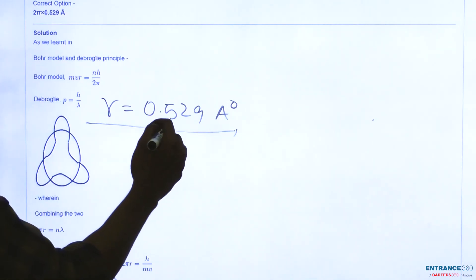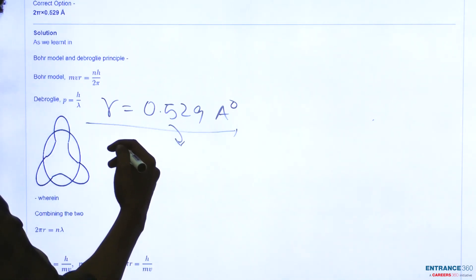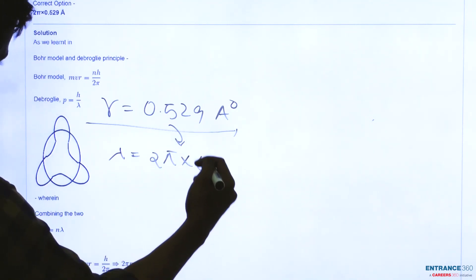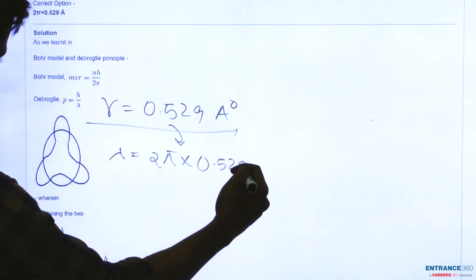So we can substitute this value into the formula of λ which is coming as 2πr and the value of r is simply 0.529 angstrom.